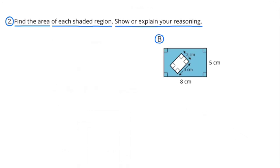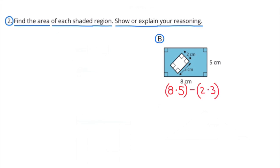B. This shape is a rectangle that's 8 by 5 and cut out of the middle of it is a rectangle that's 2 by 3. 8 times 5 minus 2 times 3.